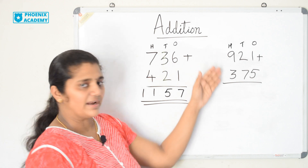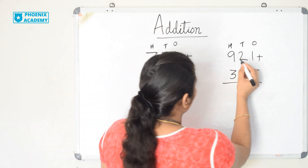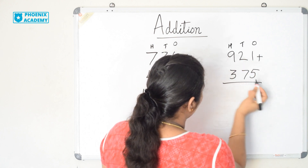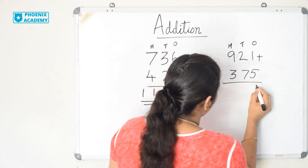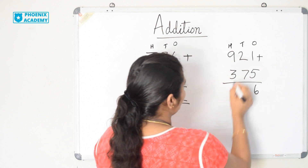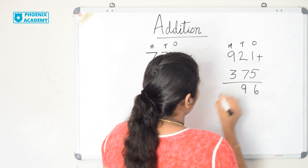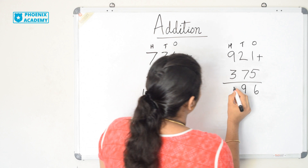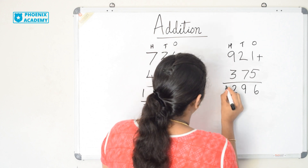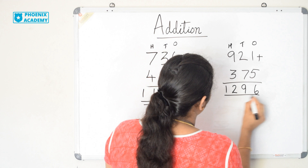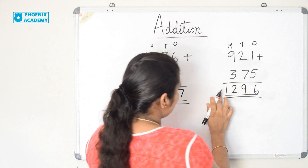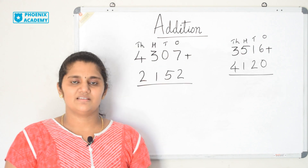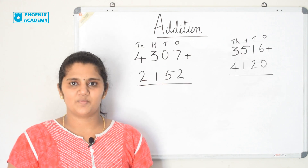Let us try: 921 plus 375. 1 plus 5 is 6. 2 plus 7 is 9. 9 plus 3 is 12, so we write 2 in the hundreds position and 1 in the thousands position. The sum is 1,296. Did you understand addition of 3-digit numbers with regrouping?